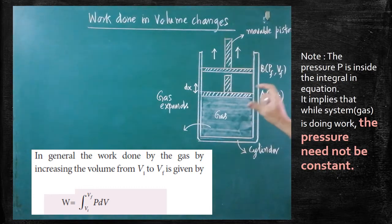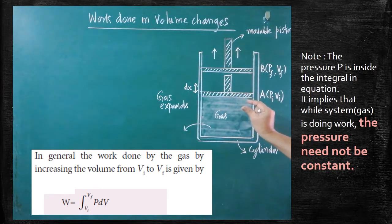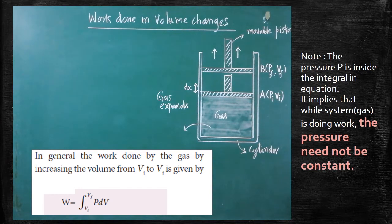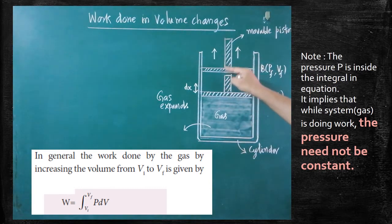First, you have to imagine that the piston is moving in a very slow manner. The pressure and volume changes both are occurring in a very slow manner. Such a process is called a quasi-static process. Therefore, this assumption is very important. When the piston moves from here to there, this is the largest displacement.